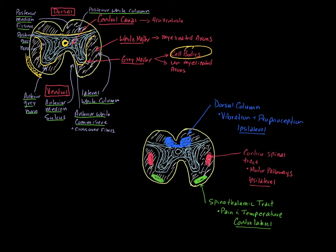Around that gray matter, you have white matter, which primarily contains myelinated axons. Information processing occurs more toward the center of the spinal cord, and the movement of information — going in and out, moving up and down the spinal cord — is more peripheral. Interneuron processing of information is more central. I'm going very basic here — this is not nearly scratching the surface of all the different tracts, so we're going big picture.